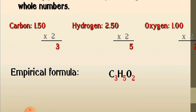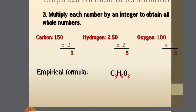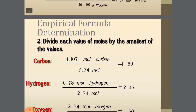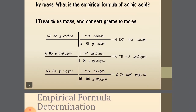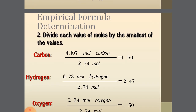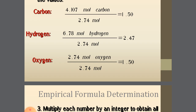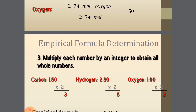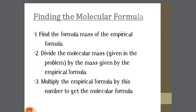So the ratio of carbon : hydrogen : oxygen = 3 : 5 : 2. The steps are: find the mass, calculate moles by dividing by atomic mass, divide all moles by the smallest value to get the ratio, then multiply by an integer to get whole numbers — giving the empirical formula.